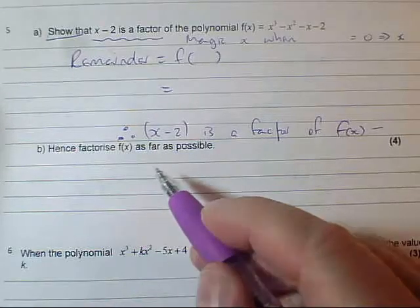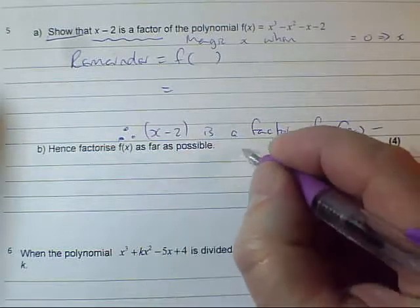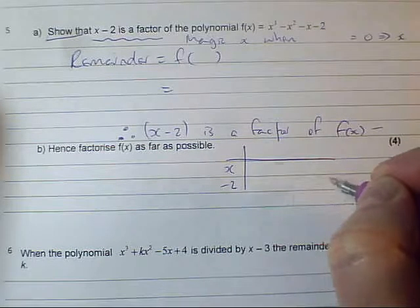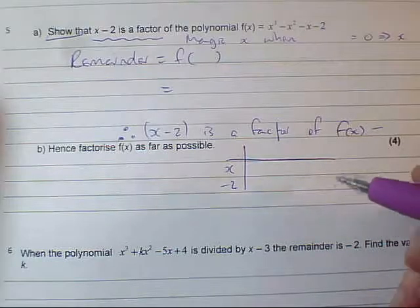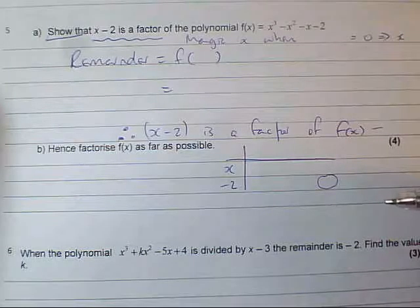And then hence we factorize f of x as far as possible. Once you know one factor, you can use the grid method. You can do x minus two down the side, fill in the grid. We know it's a factor, so at the end this bottom term here should work out exactly. It should be this minus two.